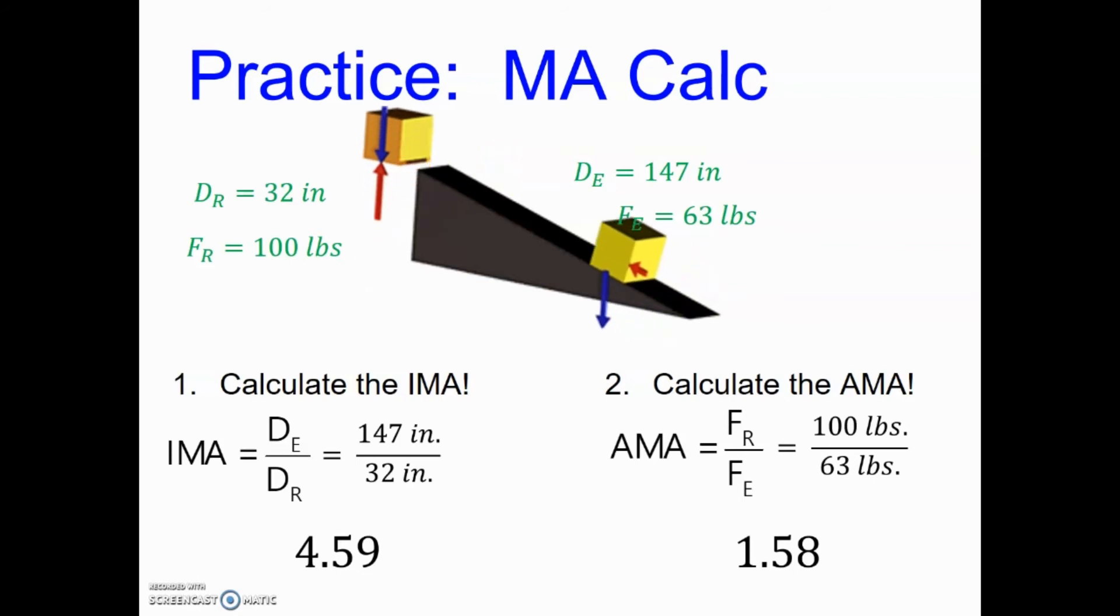So notice the IMA and the AMA are not the same. Our ideal mechanical advantage should be 4.59 but we're actually only getting an advantage of 1.58 which means something is going on. There must be some friction or some things that we're not taking into account which leads us into our next idea called efficiency where we can see how efficient is our machine in transferring or multiplying force.